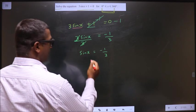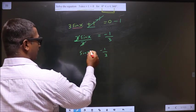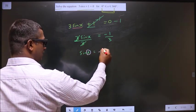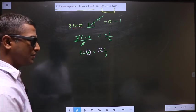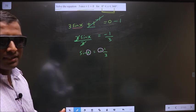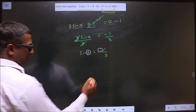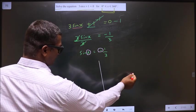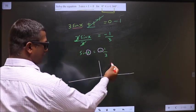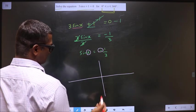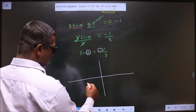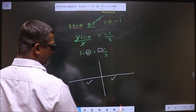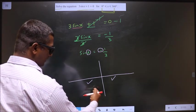Now to find the values for x, I got sin to be negative. So check in what quadrants sin is negative. It's like this: all silver tea cups. So sin is negative in the third and fourth quadrants.